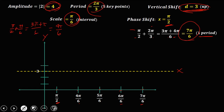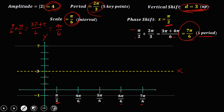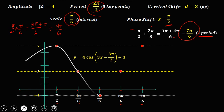With amplitude positive 4, go 4 up — 1, 2, 3, 4 — for the maximum height, and 4 down for the minimum height. Since the given is positive cosine, the graph starts at the maximum height at the phase shift, then goes to the axis, to the minimum, back to the axis, and back to the maximum. If the given were negative cosine, the graph would start at the minimum instead. This is the graph of y = 4cos(3x − 3π/2) + 3.